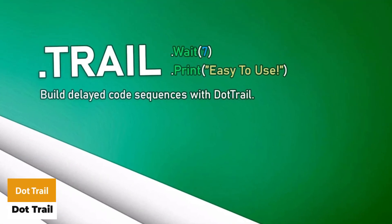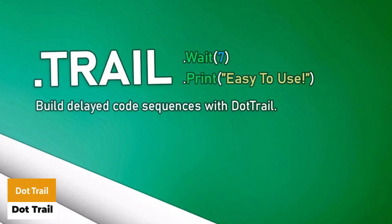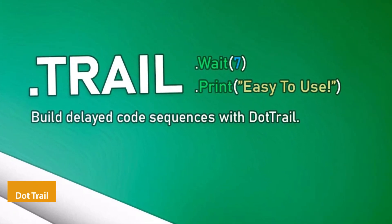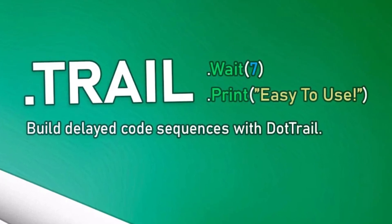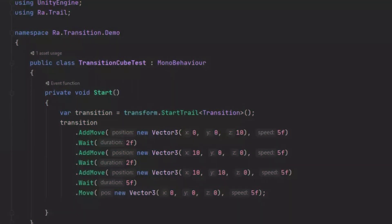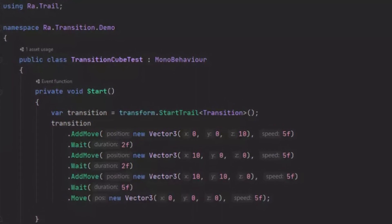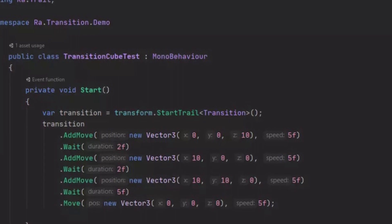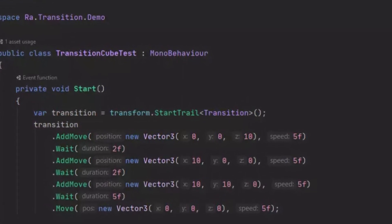The next one is Dot Trail. This allows you to write sequential code that can be used instead of an enumerator, making it easy to do animations, transitions and other things. You can write them in a concise way — whereas normally writing a coroutine to wait requires 'yield return new WaitForSeconds', with this you can shorthand it to dot wait and choose the amount of time.